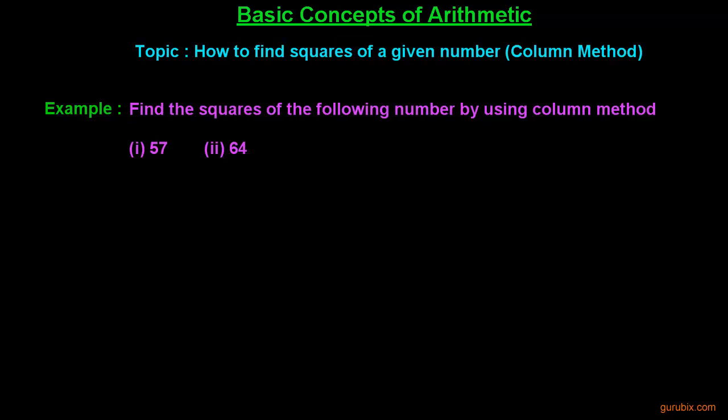We shall learn this method by an example. The example is: find the squares of the following numbers by using the column method. We are given two numbers — in part 1 we are given 57, and in part 2 we are given 64. We have to find the squares of these numbers using the column method. Let us start with part 1.